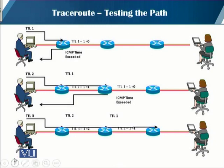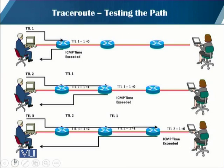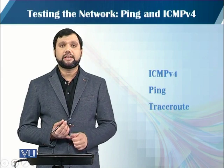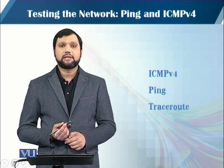Once the destination receives the packet, the TTL field reaches zero, but since it is the destination, it sends a port unreachable message back to the sender. This helps the sender identify that the response is coming from the destination itself. This is how traceroute works. To summarize, we discussed the ICMP protocol and its two main applications: ping, which tests connectivity to a host, and traceroute, which tests the path taken from source to destination.